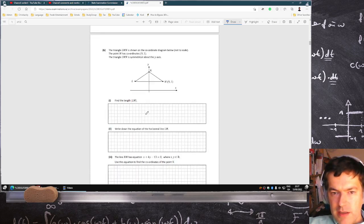We've got a triangle here. It's symmetric about the y-axis. So this point here would be minus 9, 1. Find the length of L to M. So that's 18 units long, 9 and 9. Write down the equation of the horizontal line LM. So that's the height, Y is always equal to 1.